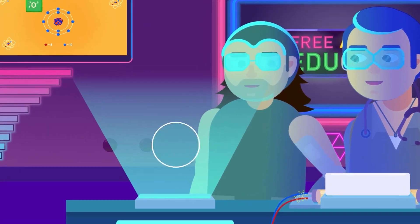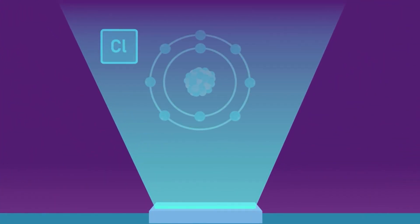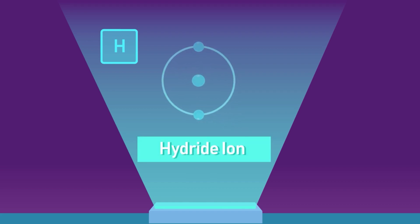The charge on the anion corresponds to the number of electrons the atom gains. For example, a chlorine atom tends to gain one electron to form Cl- ion. Hydrogen can also form a negatively charged anion by gaining one electron. It is then called a hydride ion H-.